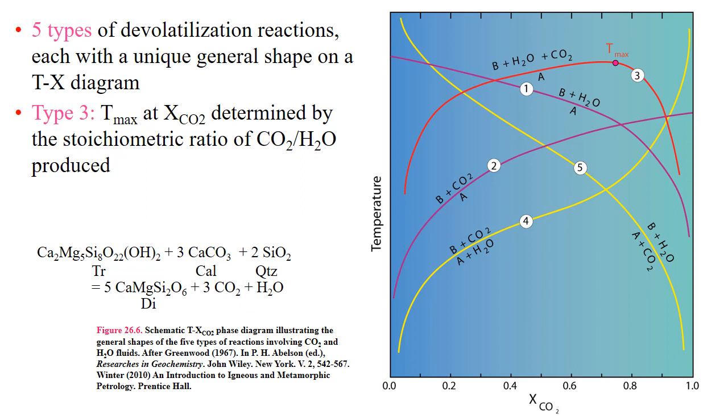Greenwood 1967 theoretically demonstrated that the location along the x-axis of the thermal maximum of the type 3 reactions will be determined by a stoichiometric coefficient of CO2 and H2O in the reaction. If equal molar quantities of CO2 and H2O are freed, Tmax will occur at a composition of CO2 equaling 0.5. In our example representing type 3 reactions, we have 5 moles of CO2 that are freed for each mole of H2O. Therefore Tmax will be located at XCO2 equaling 0.83.